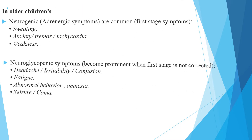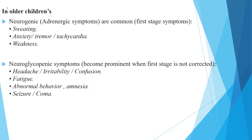In older children, there are two types of symptoms: those caused by neurogenic or adrenergic mechanisms, and those caused by neuroglycopenic mechanisms. The first stage of symptoms includes sweating, anxiety, tremor, tachycardia, and weakness. Neuroglycopenic symptoms, which become prominent when the first stage is not corrected, include headache, confusion, irritability, fatigue, abnormal behavior, seizure, and coma.